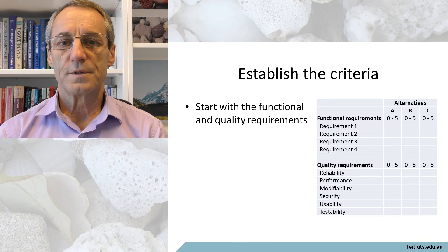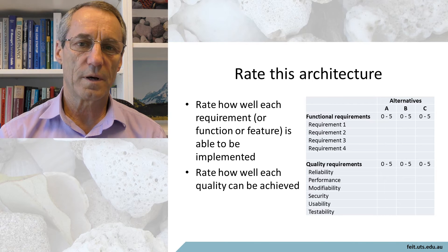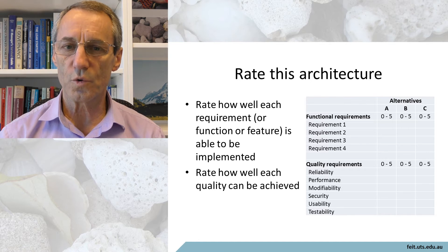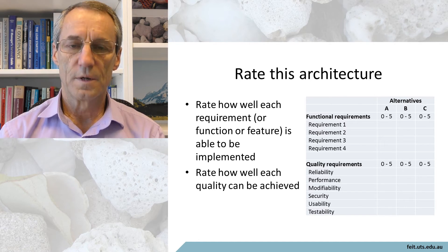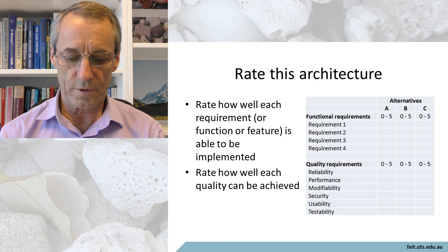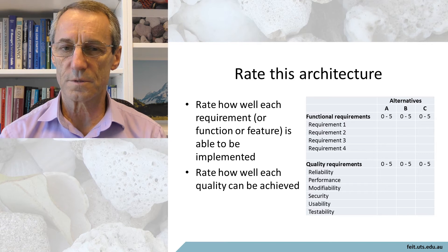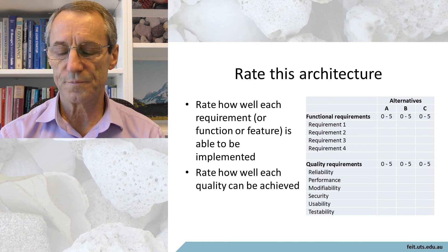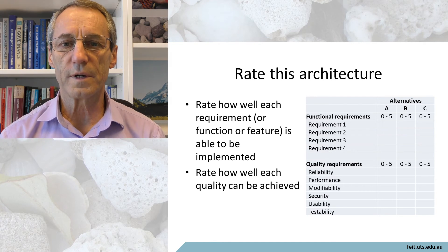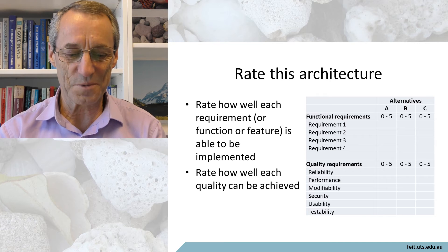The same applies with the non-functional requirements. If you have several alternative architectures, you are able to compare how well each of them could meet those criteria. We rate the architecture — rate how well each functional requirement or feature is to be implemented — and see how well the architecture supports that functionality on a small manageable scale. We're not getting down to two decimal places of accuracy. Really, what we're trying to find out is: is one better than the other?